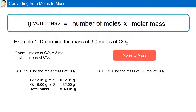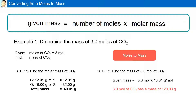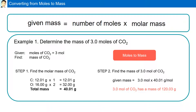The second step is to find the mass of 3 moles of CO2. We know the molar mass for 1 mole, so we multiply it by 3. Therefore, 3 moles of CO2 has a mass of 120.03 grams. We simply multiply the number of moles by the molar mass of the substance to get the required mass.